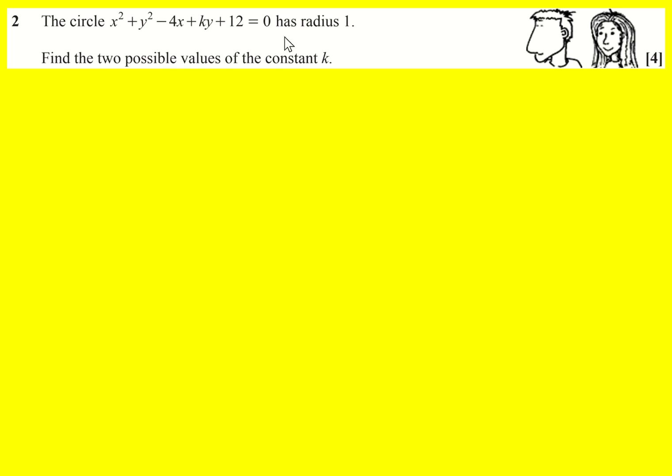We're given a circle with radius 1 and we're being asked to find two possible values of the constant k. Well, the key thing here is that the general form of a circle is x minus a all squared plus y minus b all squared equals r squared.